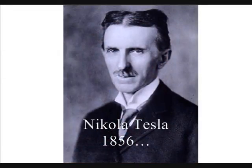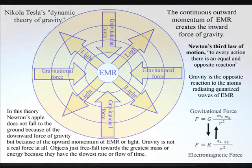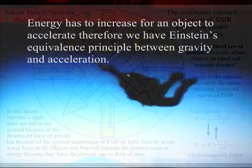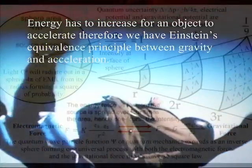In this theory, gravity is a secondary force to the electromagnetic force. Objects just freefall towards the greatest mass or energy because it has the slowest rate that time flows.